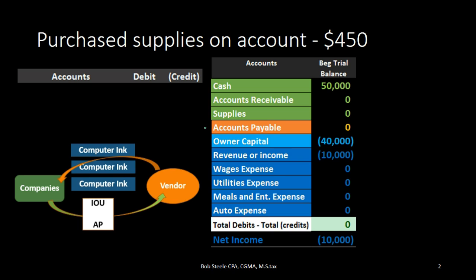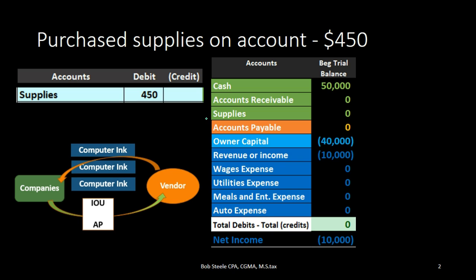I like to think about what we received first. Although we know the account is going to be accounts payable, a lot of students have trouble knowing whether it should be debited or credited because liabilities are accounts we work with less. So let's think about what we received, which is supplies. Looking at the trial balance, supplies is in the asset section. Like other assets, it has a debit normal balance, so we need to debit it to make it go up, increasing supplies.